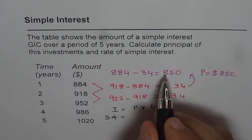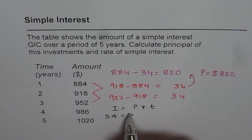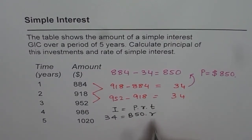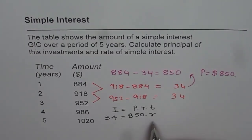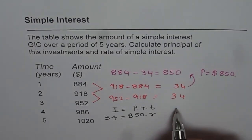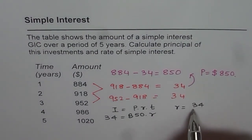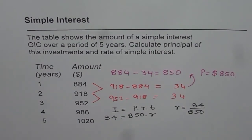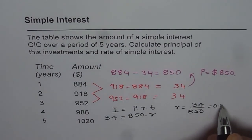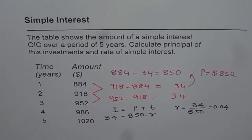The principal amount is $850. We need to find R, the rate of interest. From the formula, R equals $34 divided by $850. Using the calculator, 34 divided by 850 gives us 0.04. So 0.04 is the decimal equivalent of the rate of interest.